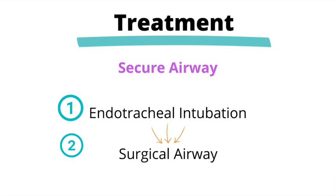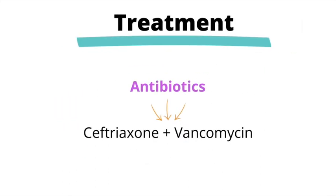We've secured the airway. But now we have to consider the fact that the whole reason this happened is because of an infection with H. flu, Staph aureus, or some sort of strep species. So we have to give them antibiotics. The antibiotics of choice are ceftriaxone and vancomycin. Ceftriaxone is given to cover H. flu and the strep species, while vancomycin is given to cover Staph aureus. With the combination of these two antibiotics, we're basically covering all the possible bugs that can lead to epiglottitis.